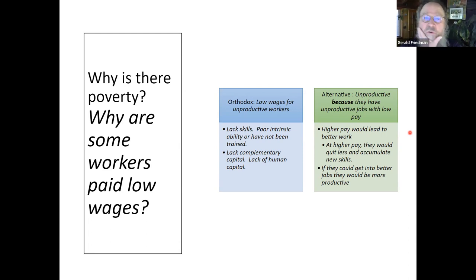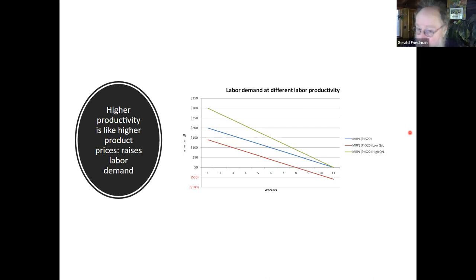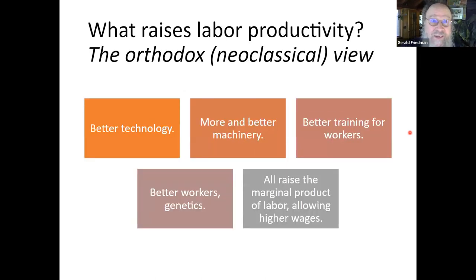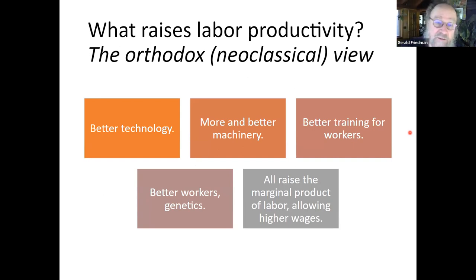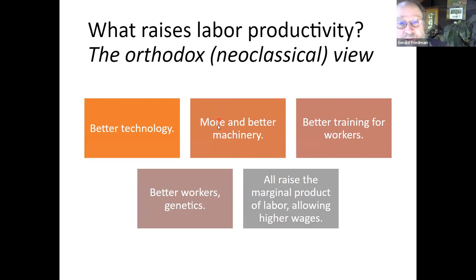Those industries are so productive and it has nothing to do with the characteristics of workers — that's the alternative approach. Labor demand, different labor productivity. This is the orthodox approach: make workers more productive and you'll hire more workers. What raises worker productivity? The orthodox approach says the marginal product of labor goes up with better technology, more and better machinery, better training for workers. Here we're distinguishing between the orthodox approach — liberal means better training, and the Obama/Clinton Democrats want better technology.